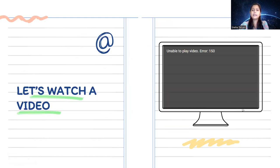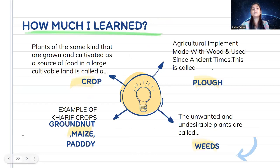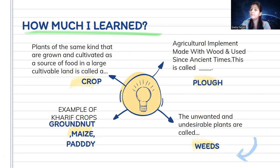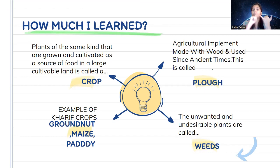There was a video I wanted to play but there was some error, so we can't watch it. Let's do a quick recap. A crop is defined as plants of the same kind grown and cultivated as a source of food in a large cultivable land. A plough is an agricultural implement made of wood used since ancient times. Unwanted and undesirable plants are called weeds. Examples of kharif crops include groundnut, maize, and bajra. Thank you for watching — bye bye, have a nice day!